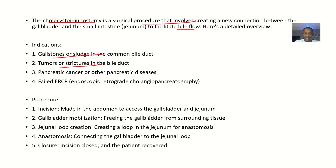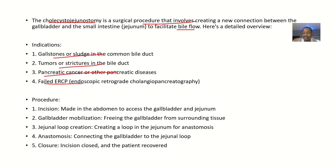If there are tumours or strictures in the bile ducts, you want to bypass the normal flow. Another indication is pancreatic cancer or pancreatic diseases where you want to bypass. Also, if there was a failed endoscopic retrograde cholangiopancreatography (ERCP), you would still want to perform this surgery.